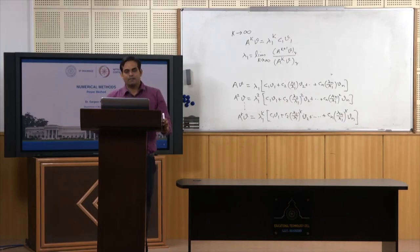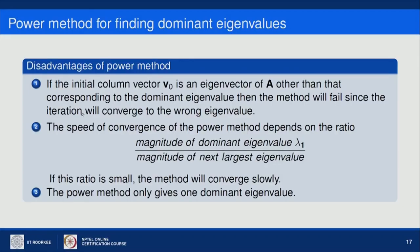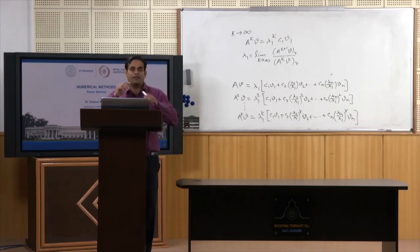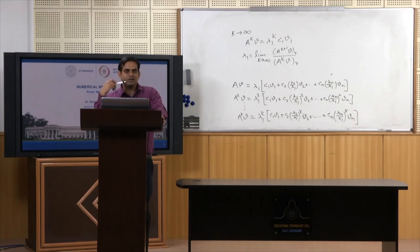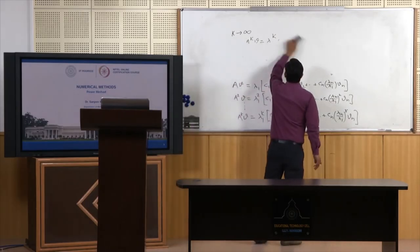There are some limitations of this method. First, if the initial vector v0 is an eigenvector of A other than the dominant one, the method will converge to the wrong eigenvalue. Second, the speed of convergence depends on the ratio of the second largest to dominant eigenvalue — if it is close to 1, convergence is slow. Third, the power method only gives one dominant eigenvalue at a time.